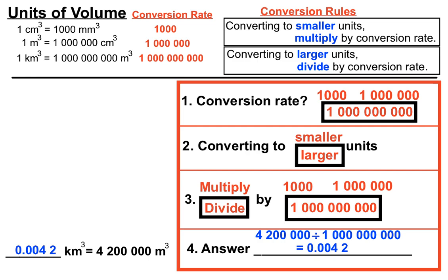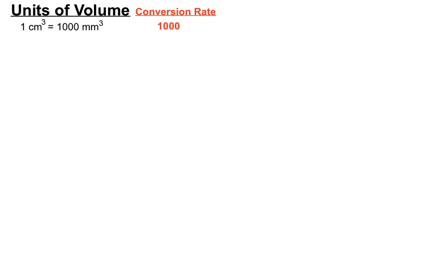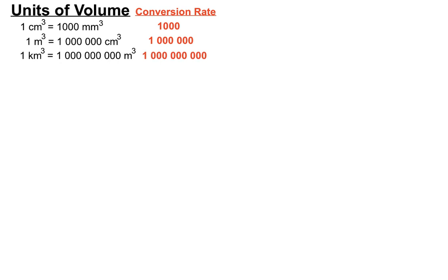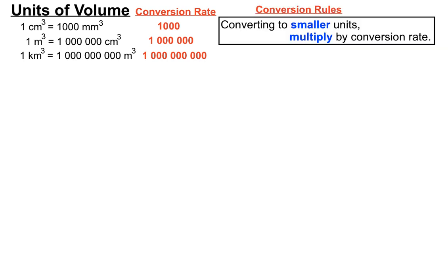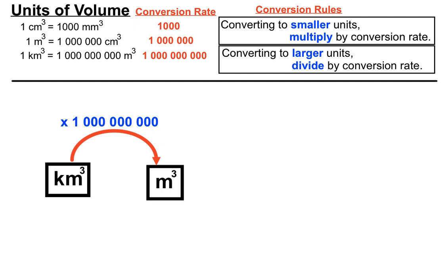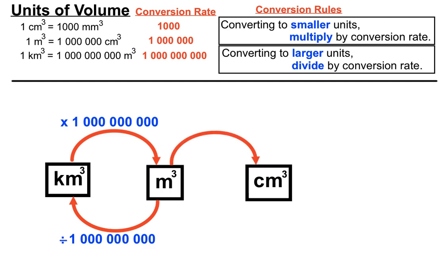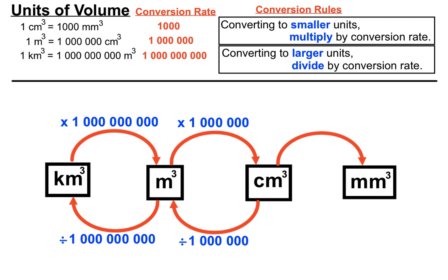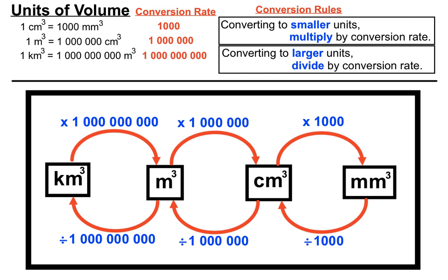To summarize: there are 1000 mm³ in a cm³, a million cm³ in a m³, and a billion m³ in a km³. The conversion rules are: converting to smaller units — multiply; converting to larger units — divide. Here's a summary diagram: km³ to m³ multiply by a billion, reverse divide by a billion; m³ to cm³ multiply by a million, reverse divide by a million; cm³ to mm³ multiply by a thousand, reverse divide by a thousand. That diagram sums up all the conversions between the different units of volume.